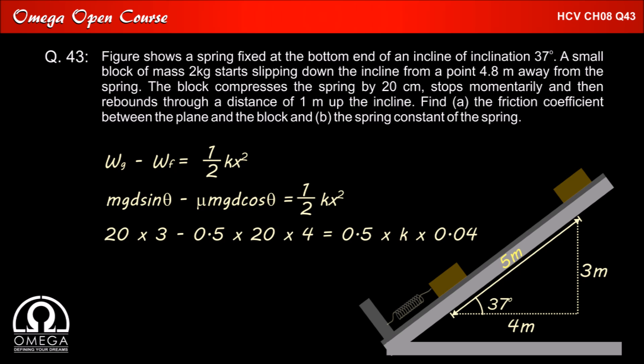Putting these values we get 20 into 3 minus 0.5 into 20 into 4 is equal to 5 into k into 0.04 which implies 0.02 k is equal to 20 i.e k is equal to 1000 Newton per meter. This is our answer.